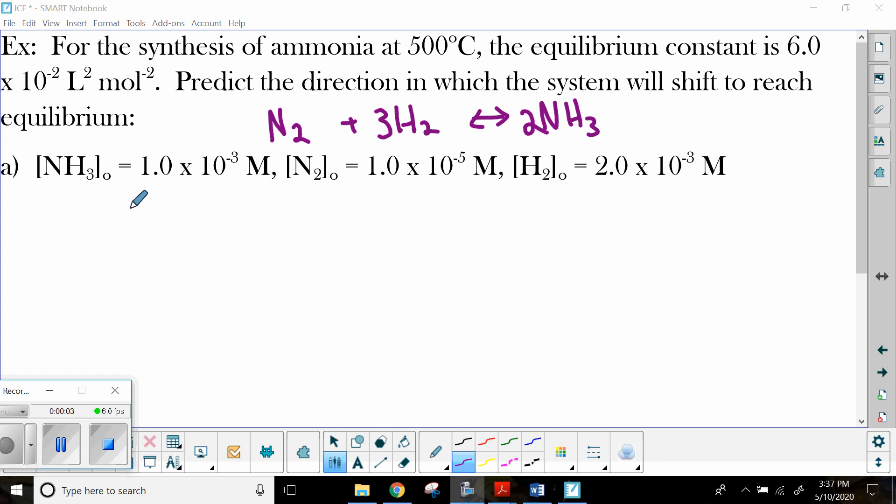Alrighty, so reaction quotient example number one. We're going to synthesize some ammonia from its elements, nitrogen and hydrogen. This is also called the Haber process, we'll talk more about that next year. I've already written the balanced chemical equation for you, so please notice that the molar ratio of nitrogen to hydrogen to ammonia is one to three to two, and I also got an equilibrium constant of 0.06 liters squared over moles squared.